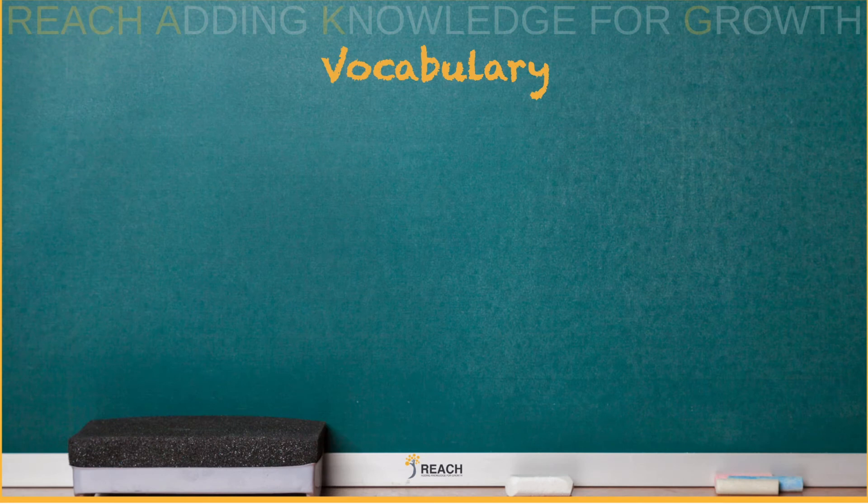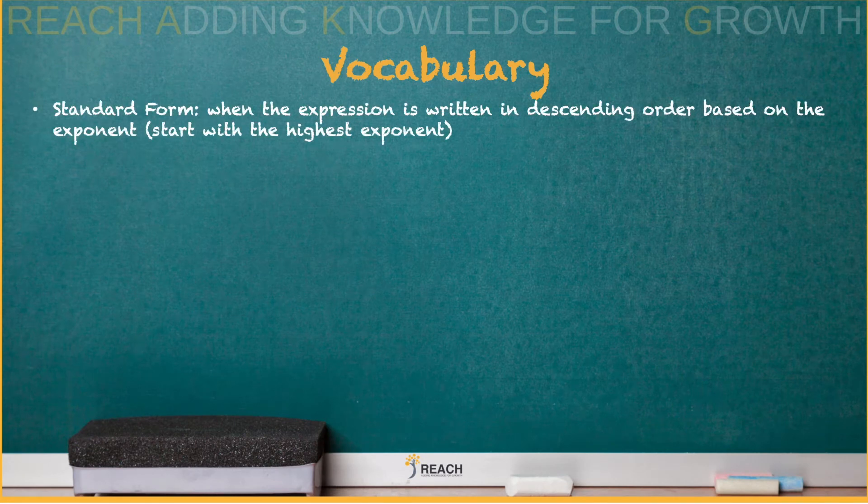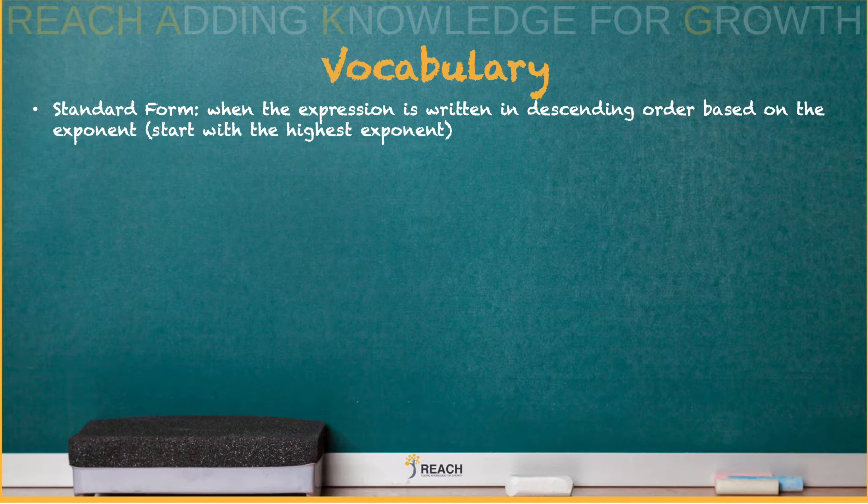Let's check out our vocabulary. When looking at polynomials, you want to make sure it's in standard form. That just means the exponent is the highest exponent going first, and then you just count down. So if I start out with X to the fifth and I go down X to the fourth, X to the third, X to the second, X to the first, and then your constant.